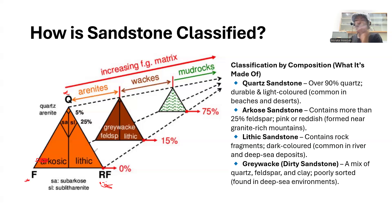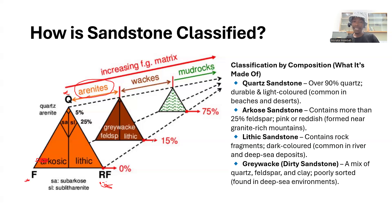If the rock has a clay matrix between 0 and 15 percent we call it an arenite. If the clay matrix is between 15 and 75 percent we call it a wacke. If it is over 75 percent matrix it will be called a mudrock.